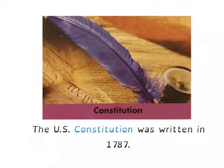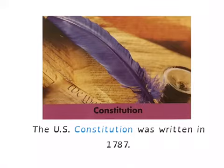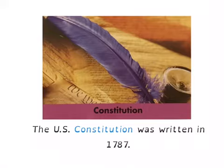Our next word is Constitution. A sentence using the word Constitution is: the U.S. Constitution was written in 1787. If you look at the picture, you can see some paper that looks really old — it's discolored, done in fancy handwriting that we don't see much these days, and you can also see ink and a feather. Think about what Constitution means.